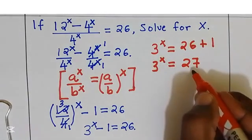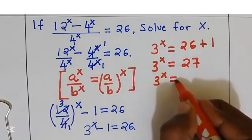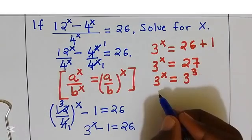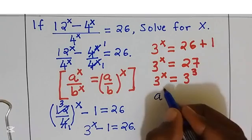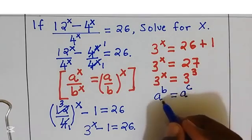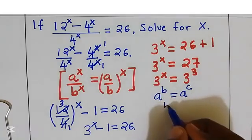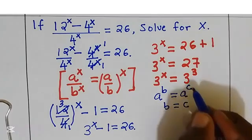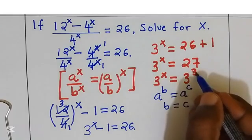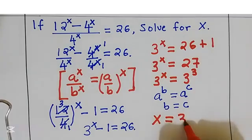But 27 is 3 power 3. So 3 power x is equal to 3 power 3. We know if we have a power b equal to a power c and the bases are the same, then the powers are the same, so b equals c. From here, x is equal to 3.